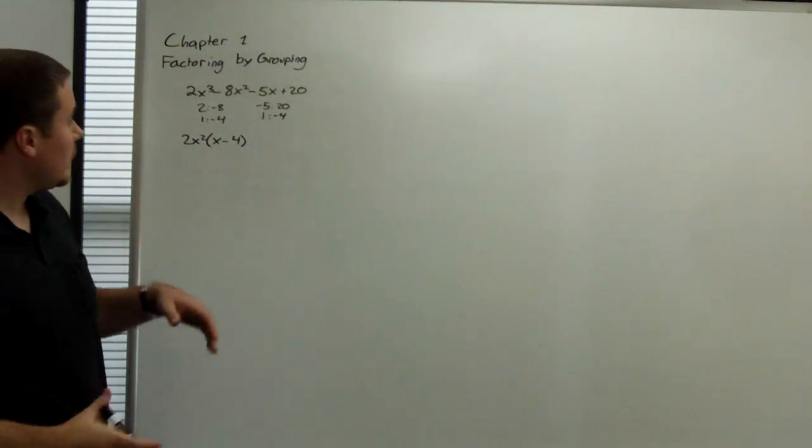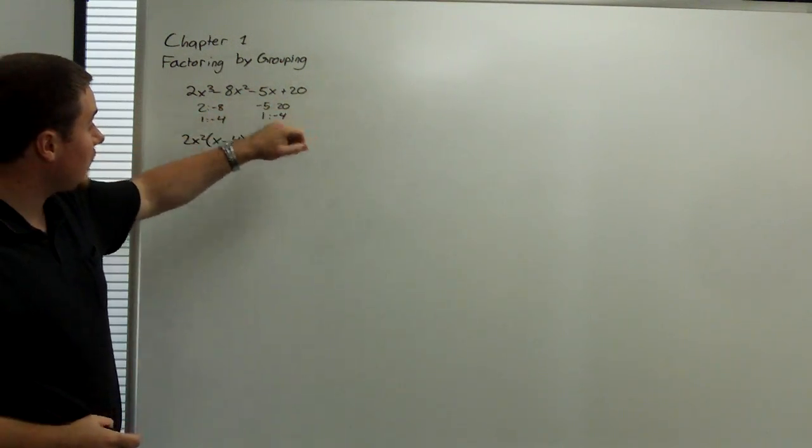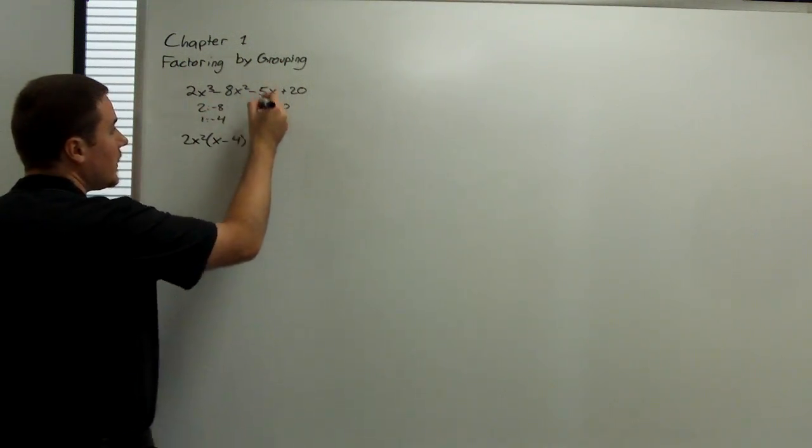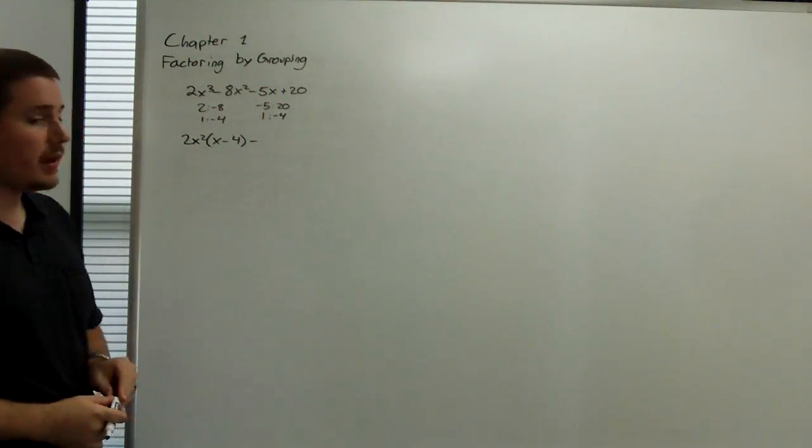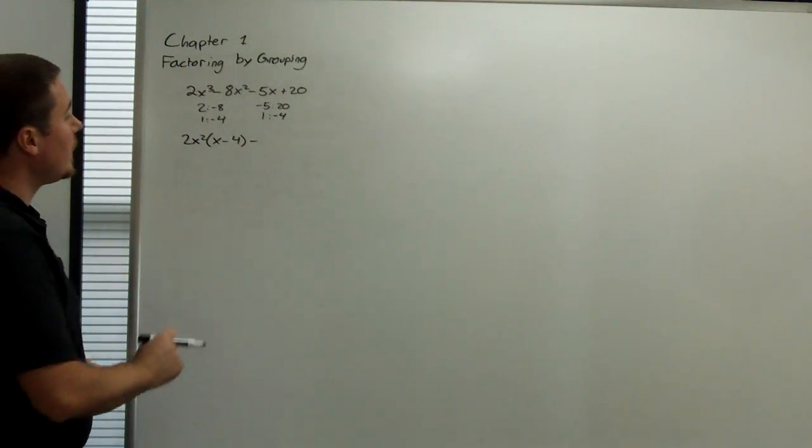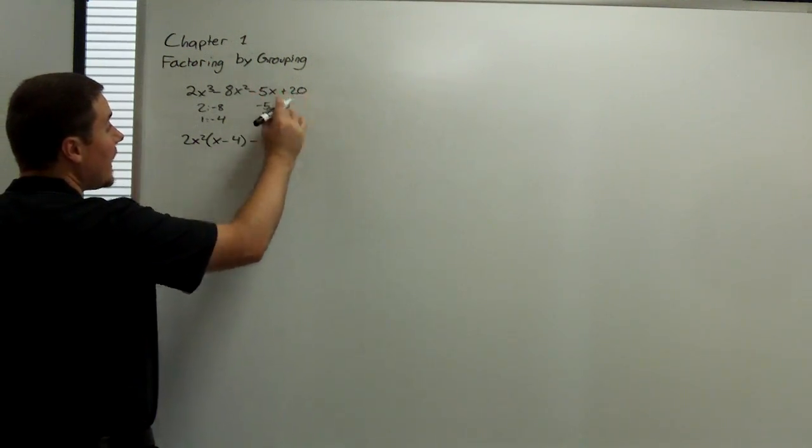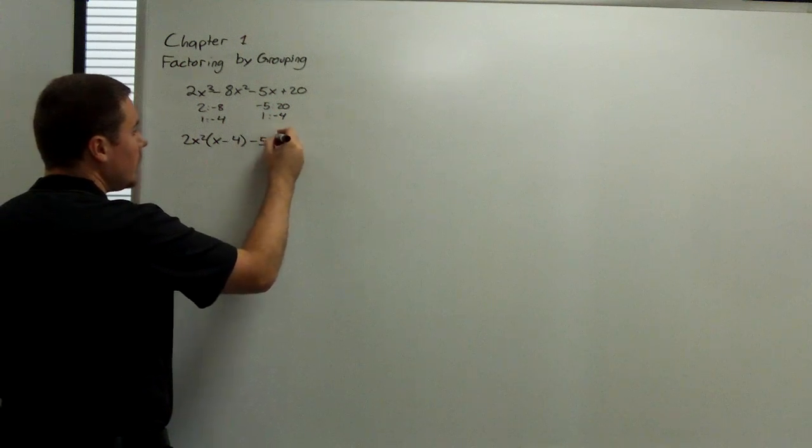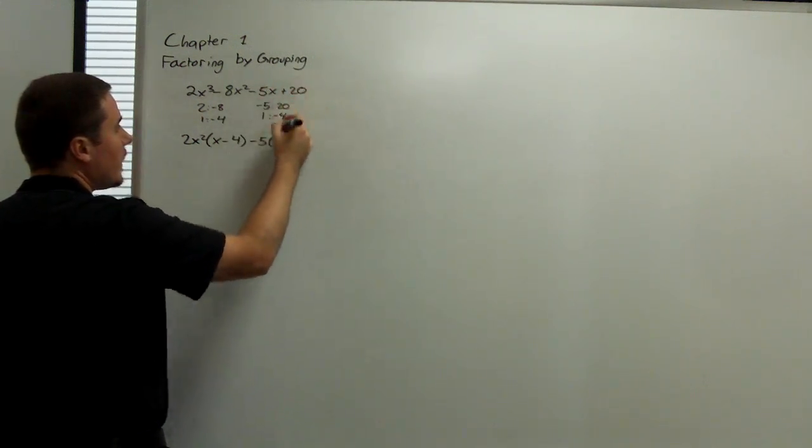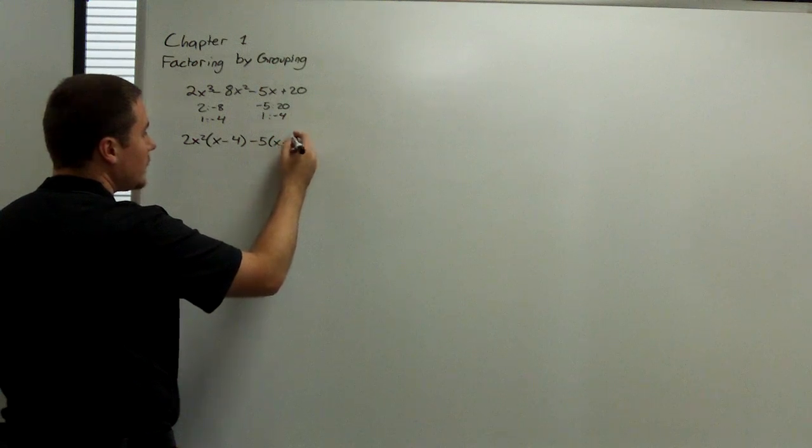Now similarly, we're going to do the same with this. We need to preserve the sign. It's always the same sign as this middle term. If we don't, then the two binomials won't match up. Now we factor out a common 5. So negative 5, actually. Negative 5 from negative 5x gives us an x. Negative 5 from 20 gives us a negative 4.